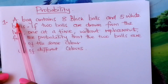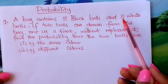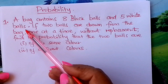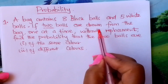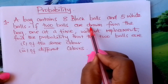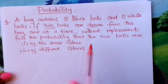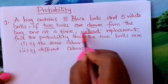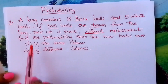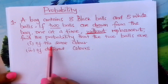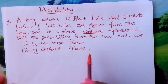A bag contains eight black balls and five white balls. If two balls are drawn or picked from the bag one at a time, without replacement — you are not replacing the ball — find the probability that the two balls are of the same color, or that they are of different colors.